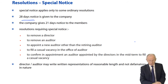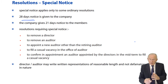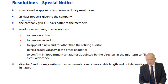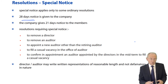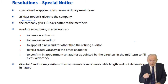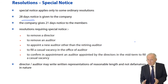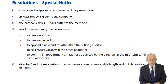28 days notice is given to the company — that's the bit that's special. Normally, notice is given to members of 21 days for an annual general meeting, and all other general meetings only require 14 days. But in this case, the notice period is special. The resolution is ordinary, but the notice is special. 28 days notice is given to the company at its registered office.